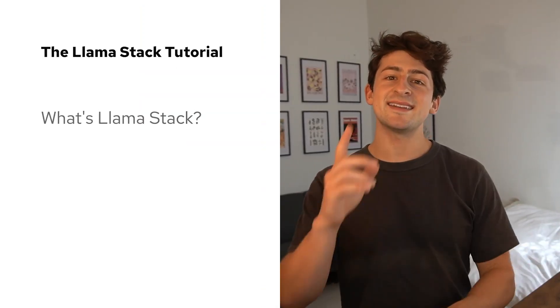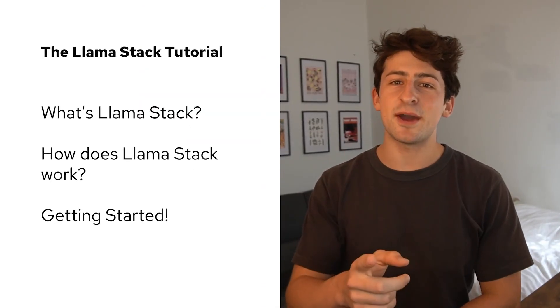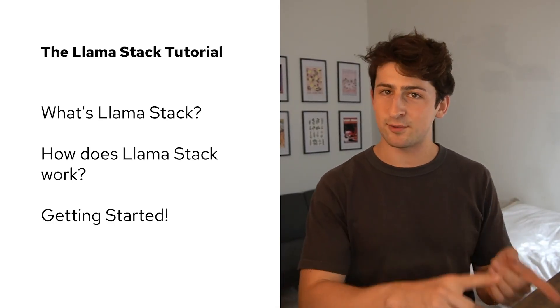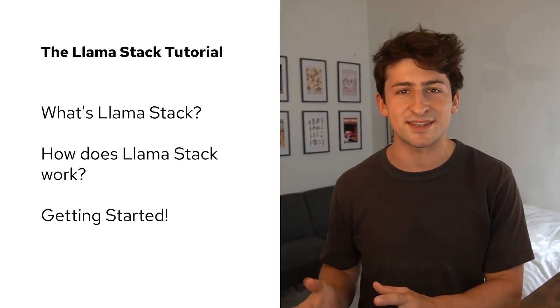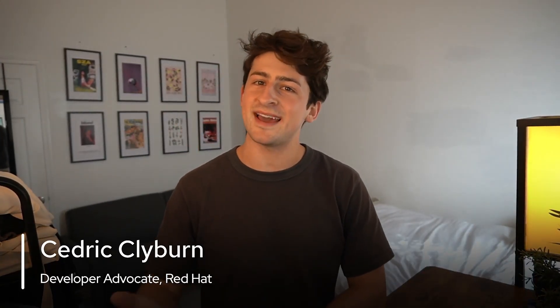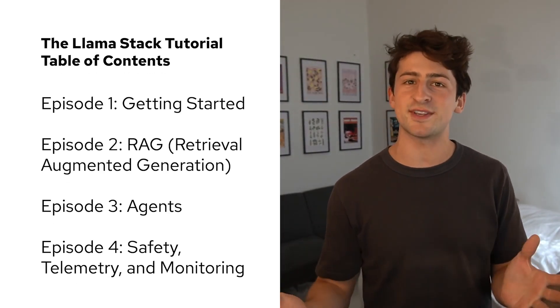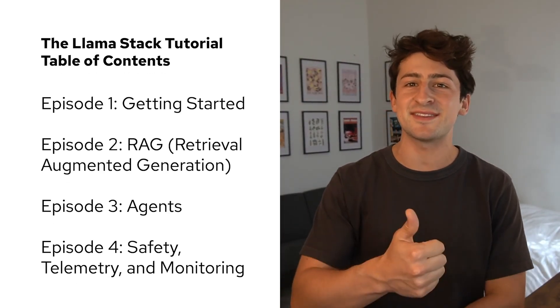Just as Kubernetes introduced a standardized control plane with an API server, Llama Stack is providing a consistent API for inference, RAG, agents, safety, and more — so that you can switch between providers and add new capabilities as your application grows. In the next few episodes of this series we're going to be learning about Llama Stack, how it works, and hands-on examples that you can try yourself.